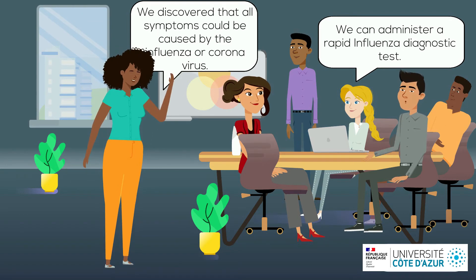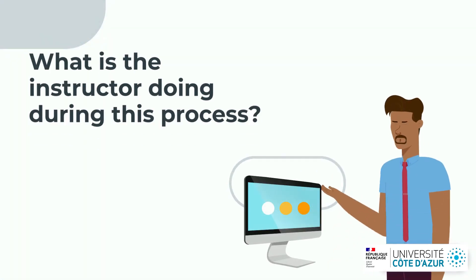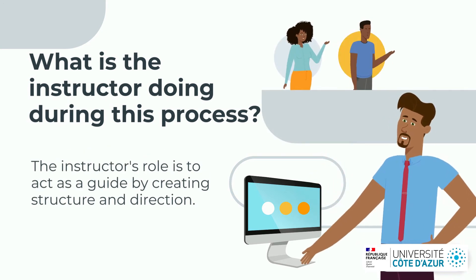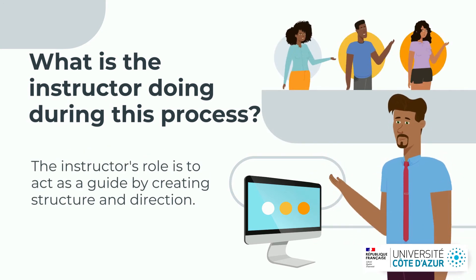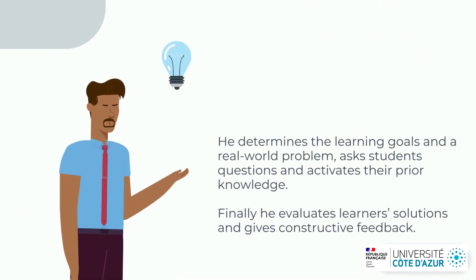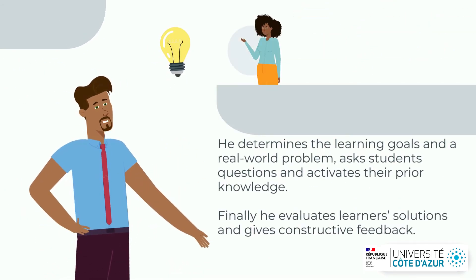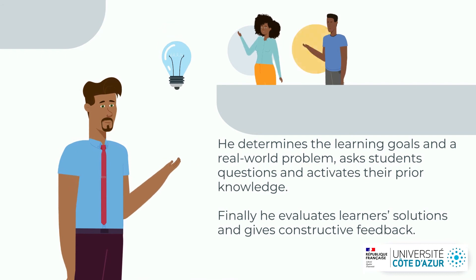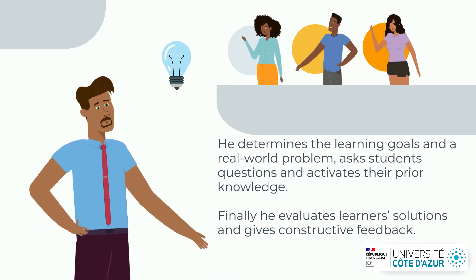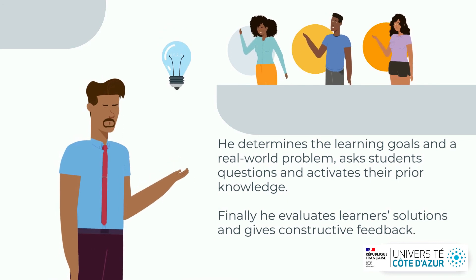And what is the instructor doing during this process? The instructor's role is to act as a guide by creating structure and direction. He determines the learning goals in a real-world problem, asks students questions, and activates their prior knowledge. Finally, he evaluates learners' solutions and gives constructive feedback.